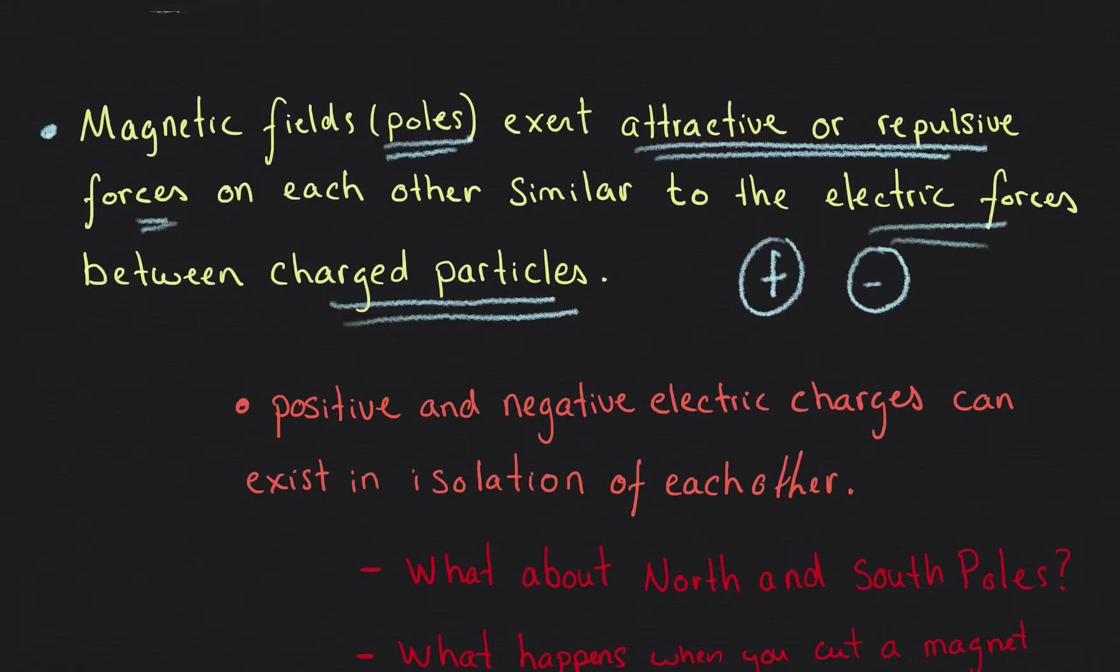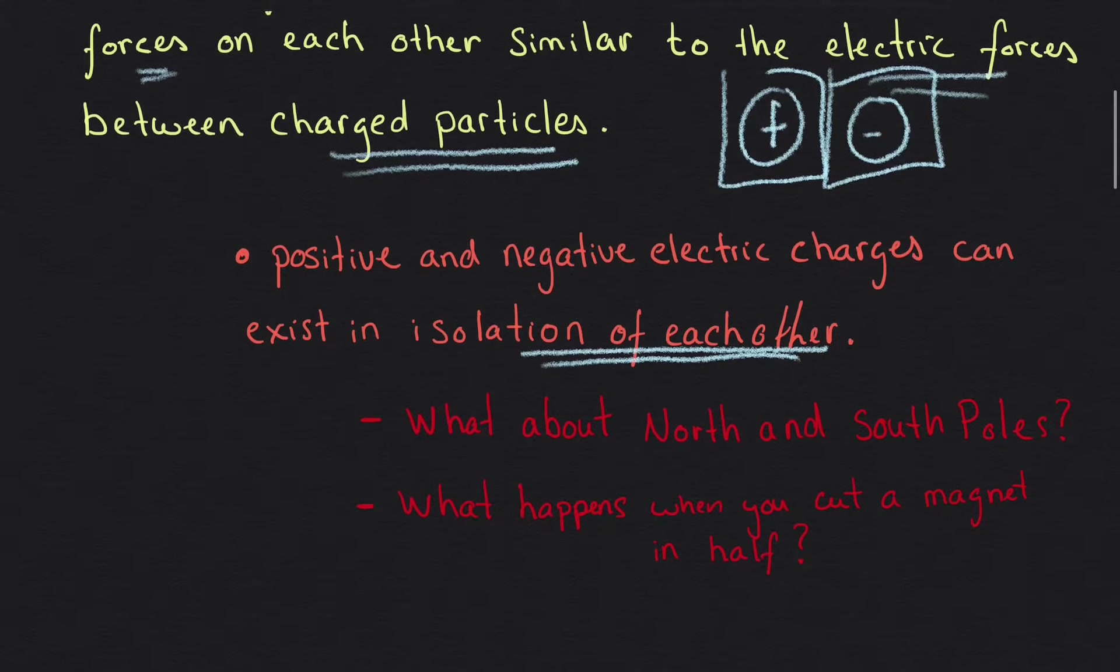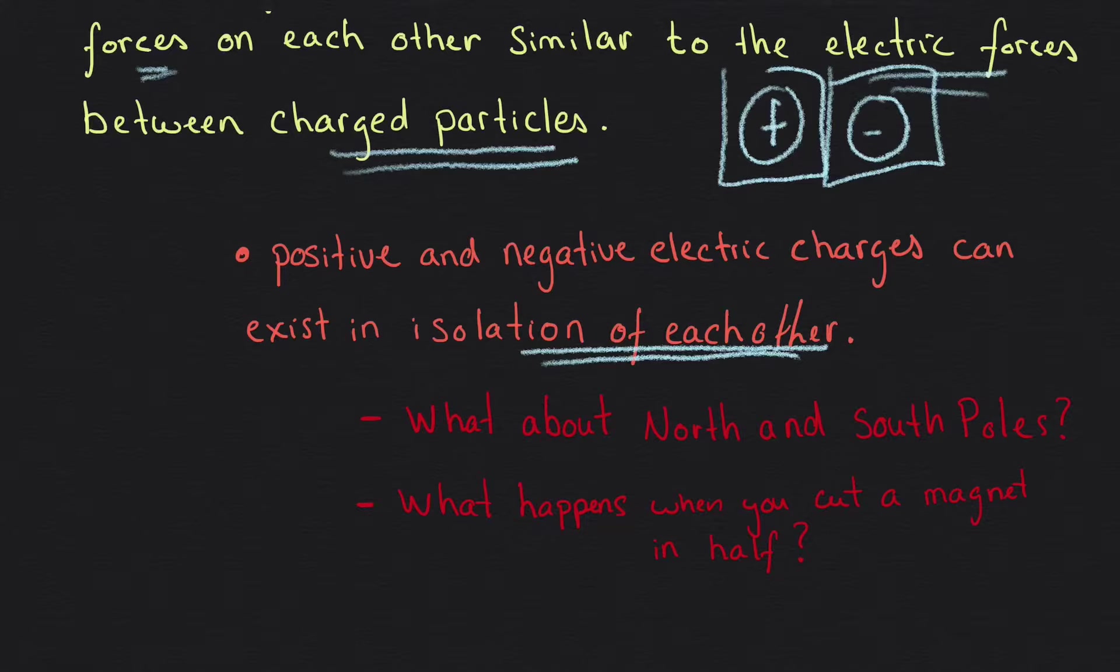Positive and negative electric charges can exist in isolation of each other. This is a point that when I drew my charges, for example, this positive charge or the negative charge next to it, we were able to express and describe that charge in isolation and make its existence possible. But there are two questions that we can have in mind as we go through this chapter, which is, what about the North and South Pole, which are the poles, the magnetic poles that we're talking about?